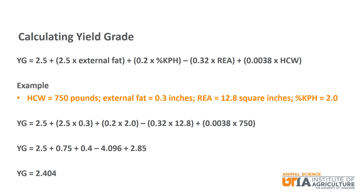To once again show that math is important, we are going to work through the formula for calculating yield grade. The yield grade formula is: yield grade = 2.5 + (2.5 × external fat) + (0.2 × percent KPH) − (0.32 × rib eye area) + (0.0038 × hot carcass weight).